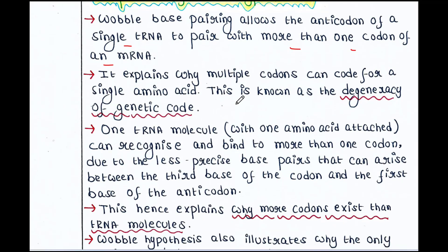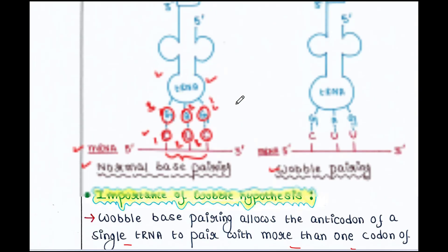So, it explains why multiple codons can code for a single amino acid. This is known as the degeneracy of genetic code. One tRNA molecule with one amino acid attached can recognize and bind to more than one codon due to the less precise base pairs that can arise between the third base of the codon and the first base of the anticodon.